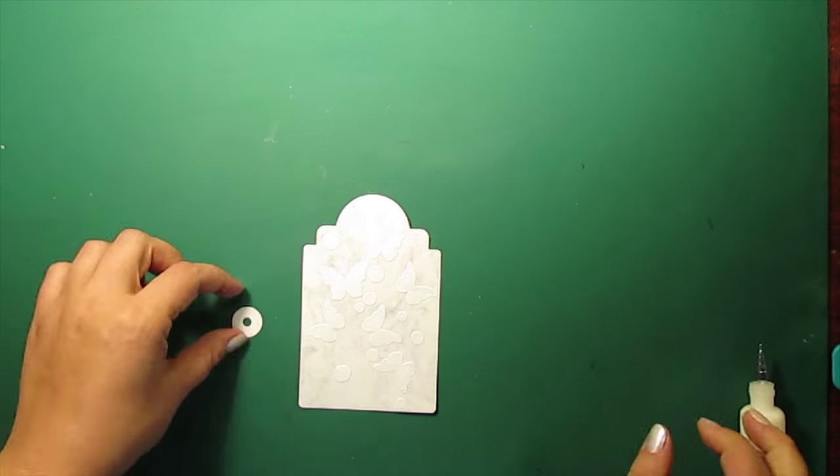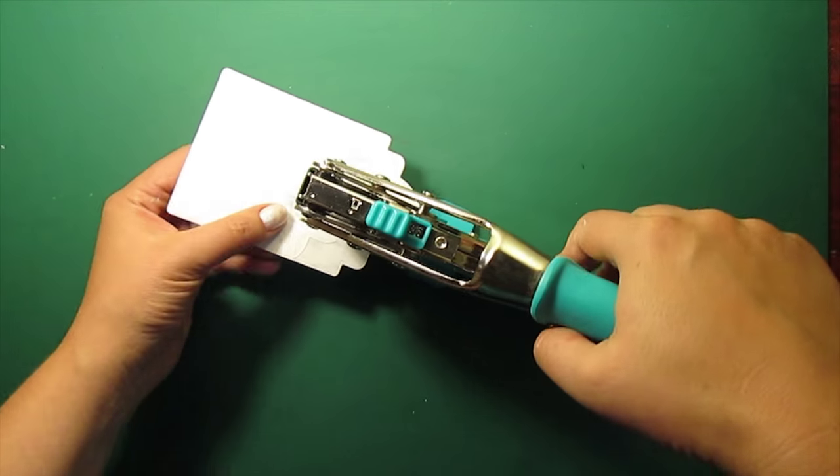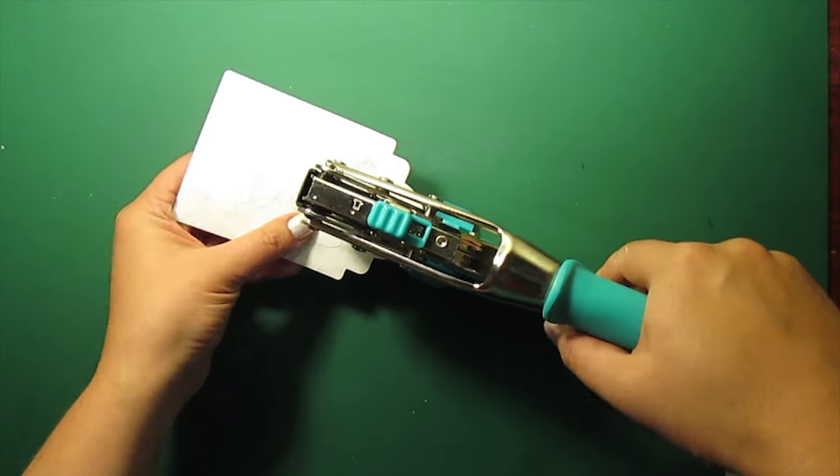To complete the tag, I'm sticking down the decorative reinforcement ring and punching a hole using my Cropper dial tool.